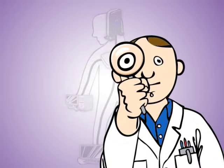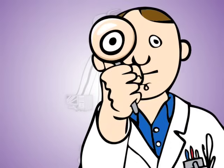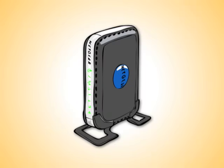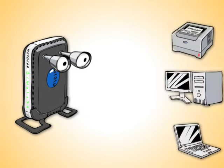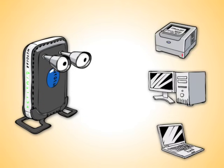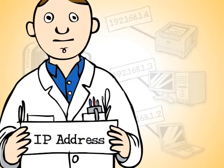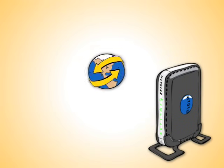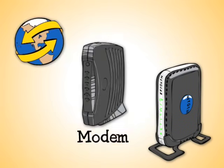Now let's check out each of the components of a wired network in more detail. We'll start with the router. A router has a smart little computer inside that identifies all of the computers and devices on your network and assigns a unique number to each one. Techie people call this an IP address.